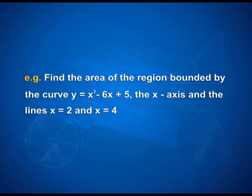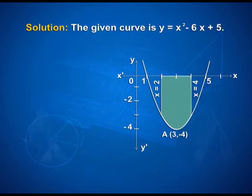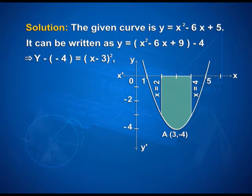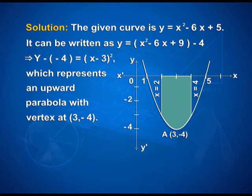Now let us look at one example. Find the area of the region bounded by the curve y equals x squared minus 6x plus 5, the x-axis, and the lines x equals 2 and x equals 4. The given curve y equals x squared minus 6x plus 5 can be written as y equals x squared minus 6x plus 9 minus 4. Here, 5 is written as 9 minus 4, so that y plus 4 equals (x minus 3) squared, which represents an upward parabola with vertex at (3, -4).